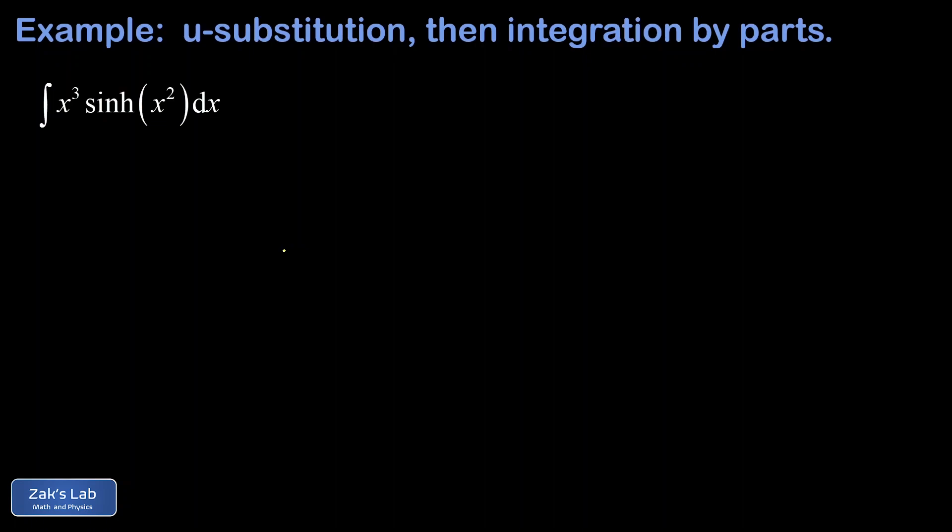In this video, we're computing the integral of x cubed sinh of x squared, where sinh is the hyperbolic sine function. All we need to know about the hyperbolic sine function is that its derivative is cosh, the hyperbolic cosine function, and vice versa. I'll post a link to where those facts were derived.